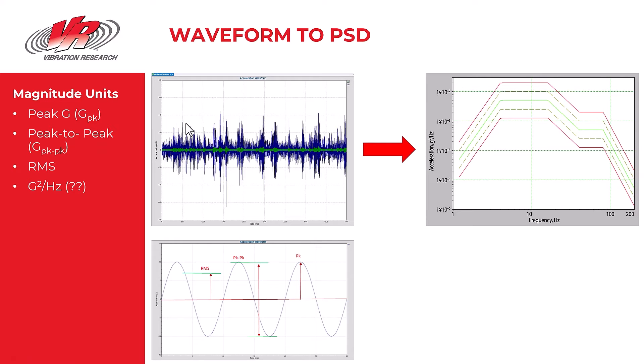Previously we have examined the concept of converting time domain data into the frequency domain and why we should do it and generally how to do it. In this video we want to examine some units used in the vibration industry, particularly the units of G squared per Hertz and GRMS.